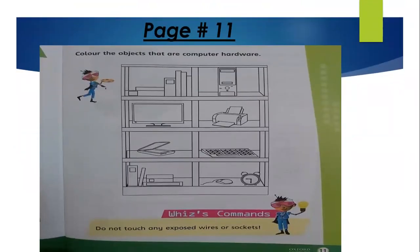Now for your homework: this is page number 11 of your book. There are eight pictures given on this page, and you have to color the objects that are computer hardware. Think about which parts shown in these pictures are parts of a computer — if you think it is a part of the computer, simply color it. Next week I will help you solve this page, but till then try to solve it on your own.